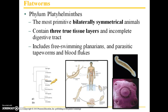Moving on to the flatworms, these are classified within phylum Platyhelminthes and they are the most primitive bilaterally symmetrical animals. They contain three true tissue layers and an incomplete digestive tract, and it includes free-swimming planarians, which are commonly used in high school and college biology classes for regeneration studies, as well as parasitic tapeworms and blood flukes.